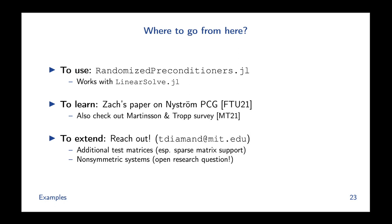For linear system solves, check out randomizedpreconditioners.jl, which works with interfaces like LinearSolve.jl. For the theory, see Zach's paper on Nystrom preconditioned conjugate gradient and the Martinsson-Tropp survey on randomized numerical linear algebra. If you want to extend this package, please reach out — we could use additional test matrices, especially for sparse matrices, which we don't have good support for. We also don't yet have good preconditioners for non-symmetric systems, which is an open research question; please reach out if you're interested, and we can help you avoid some wrong roads we've already explored.